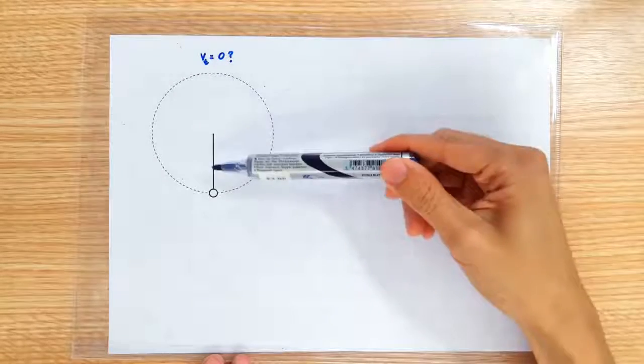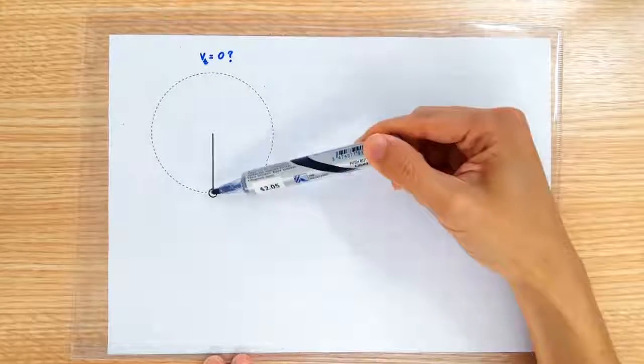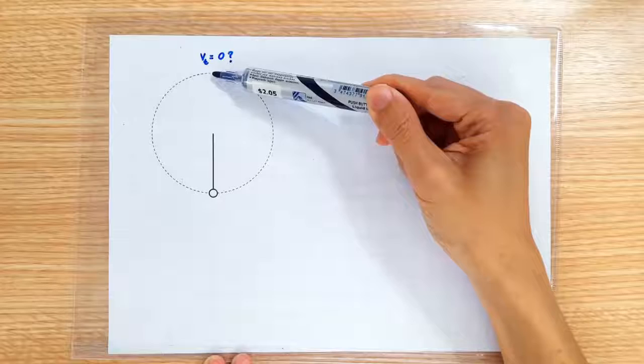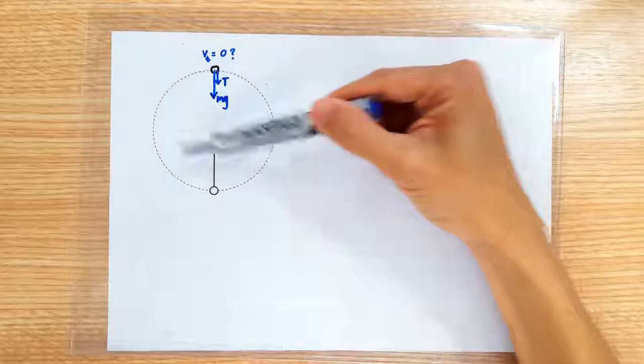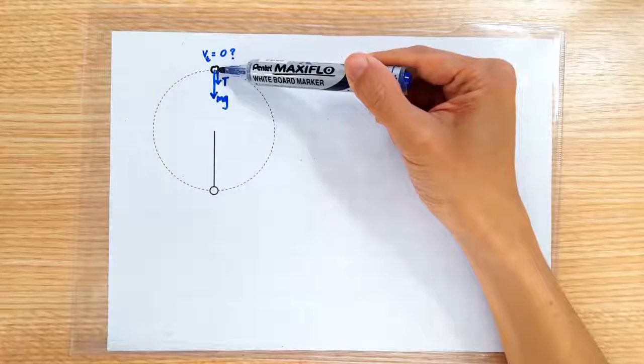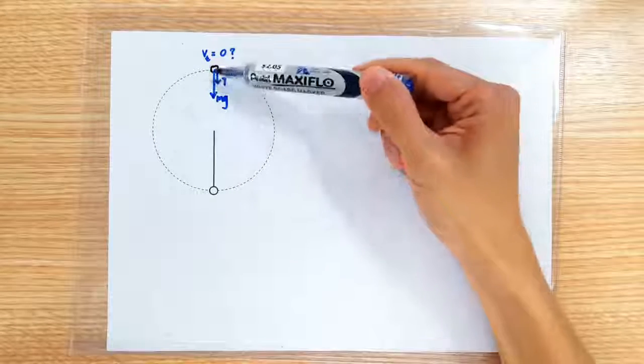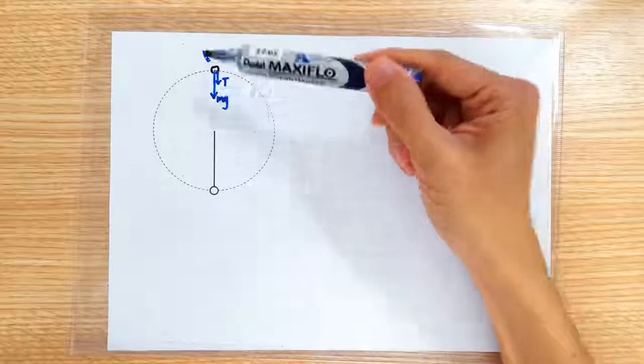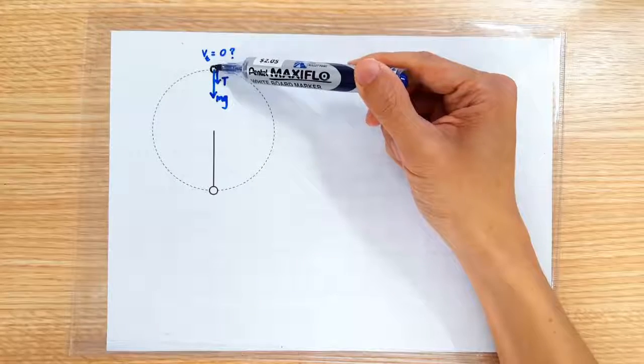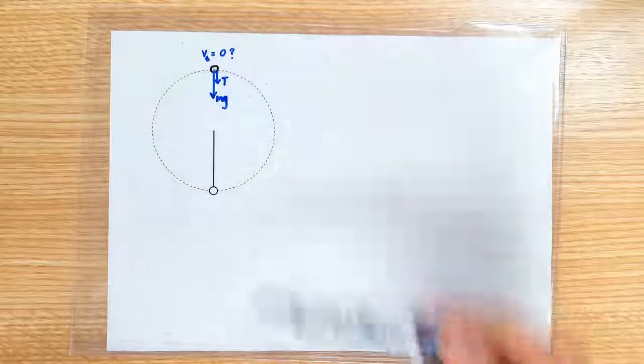Some students think that to do the loop successfully, the stone just has to arrive at the top with a velocity of zero. That can't be right because if the stone arrives here with zero velocity and the earth is still pulling the stone down, the rope is still pulling the stone down, what will happen to the stone? It's going to fall straight down, it will not be doing the circular motion.